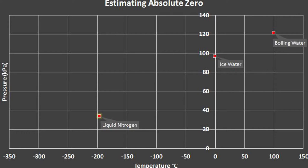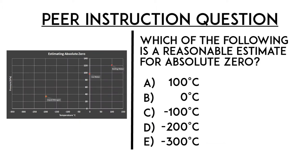Let's explore this concept in a peer instruction question. Can you use this graph to estimate a value for absolute zero? The value of temperature where the pressure is zero because the particles are no longer moving. Which of the following is a reasonable estimate for absolute zero? Please record your vote on a piece of paper and explain your reasoning. Your instructor will now stop the video.